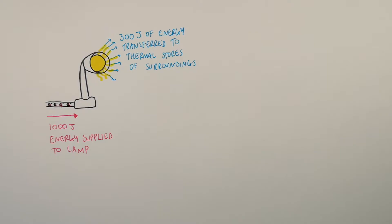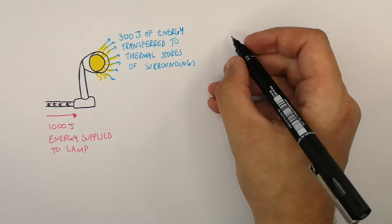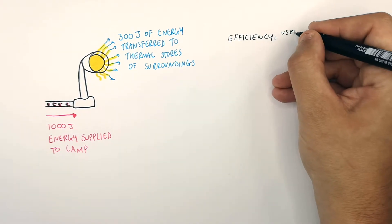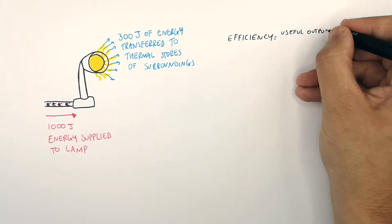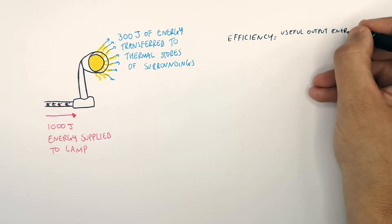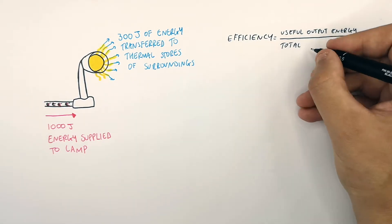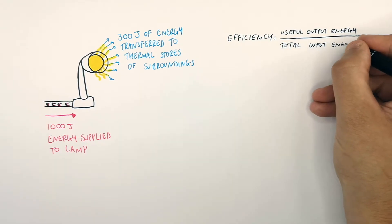We want to calculate the efficiency of this lamp. The equation is: efficiency equals useful output energy divided by the total input energy.